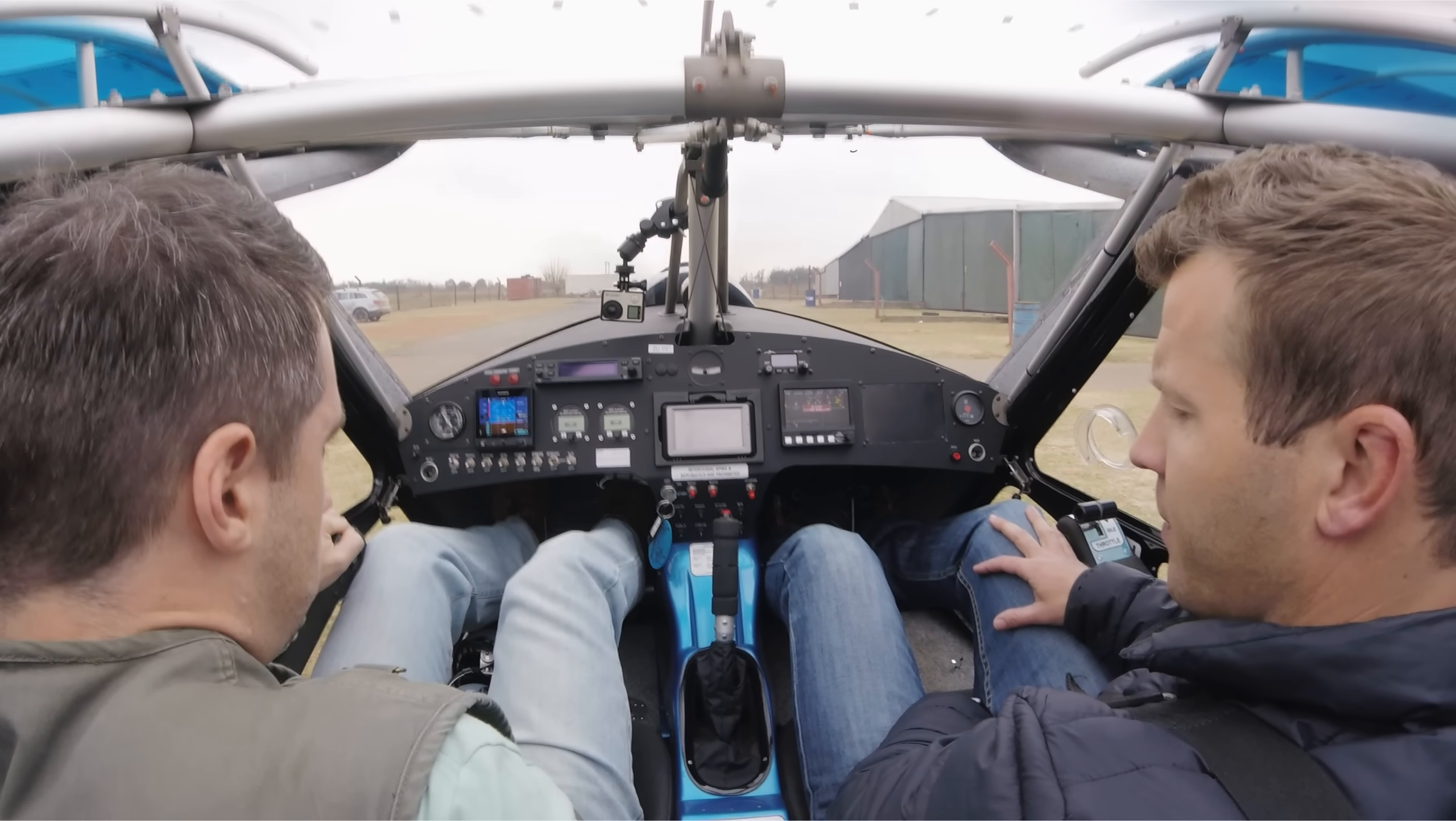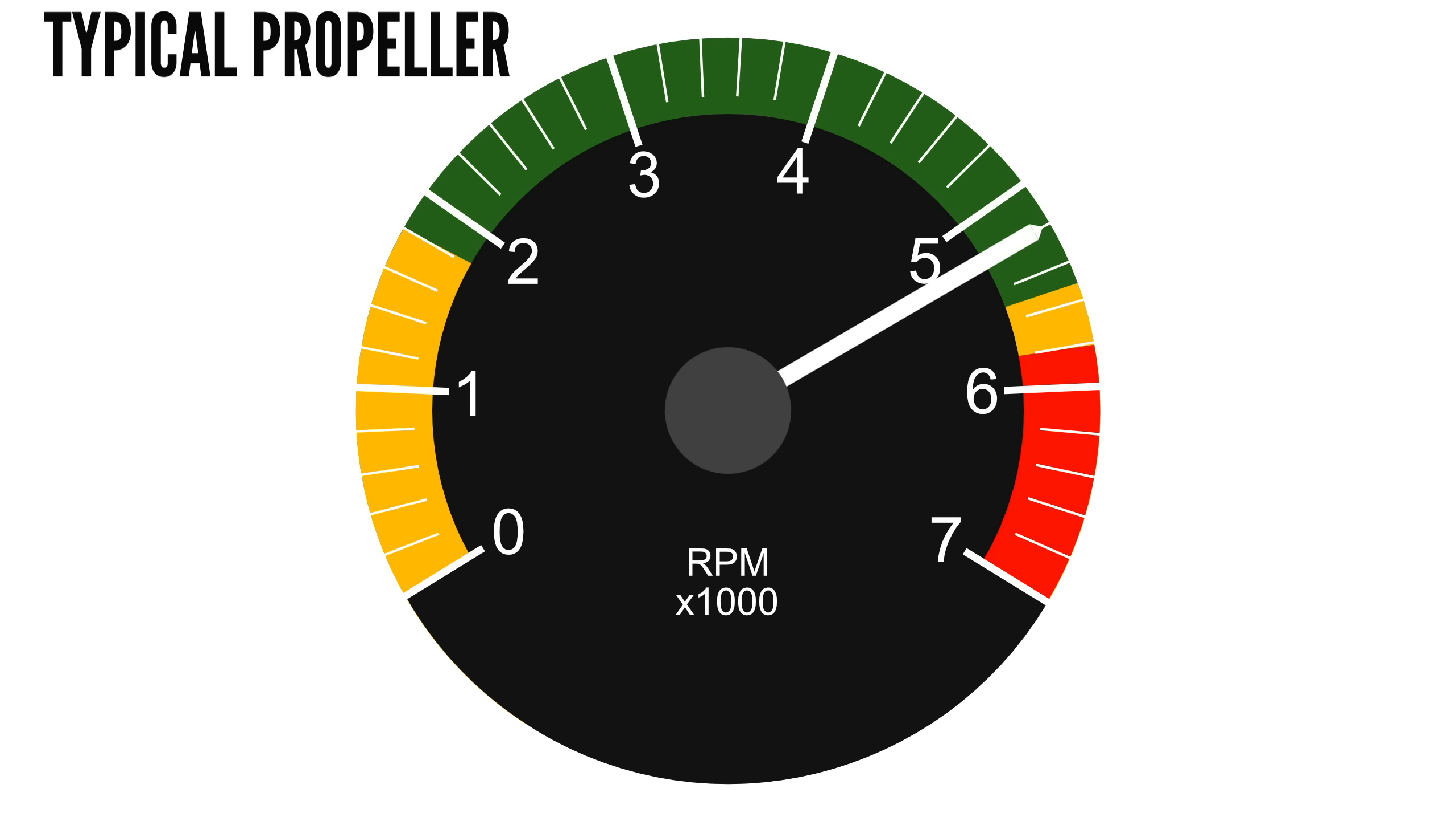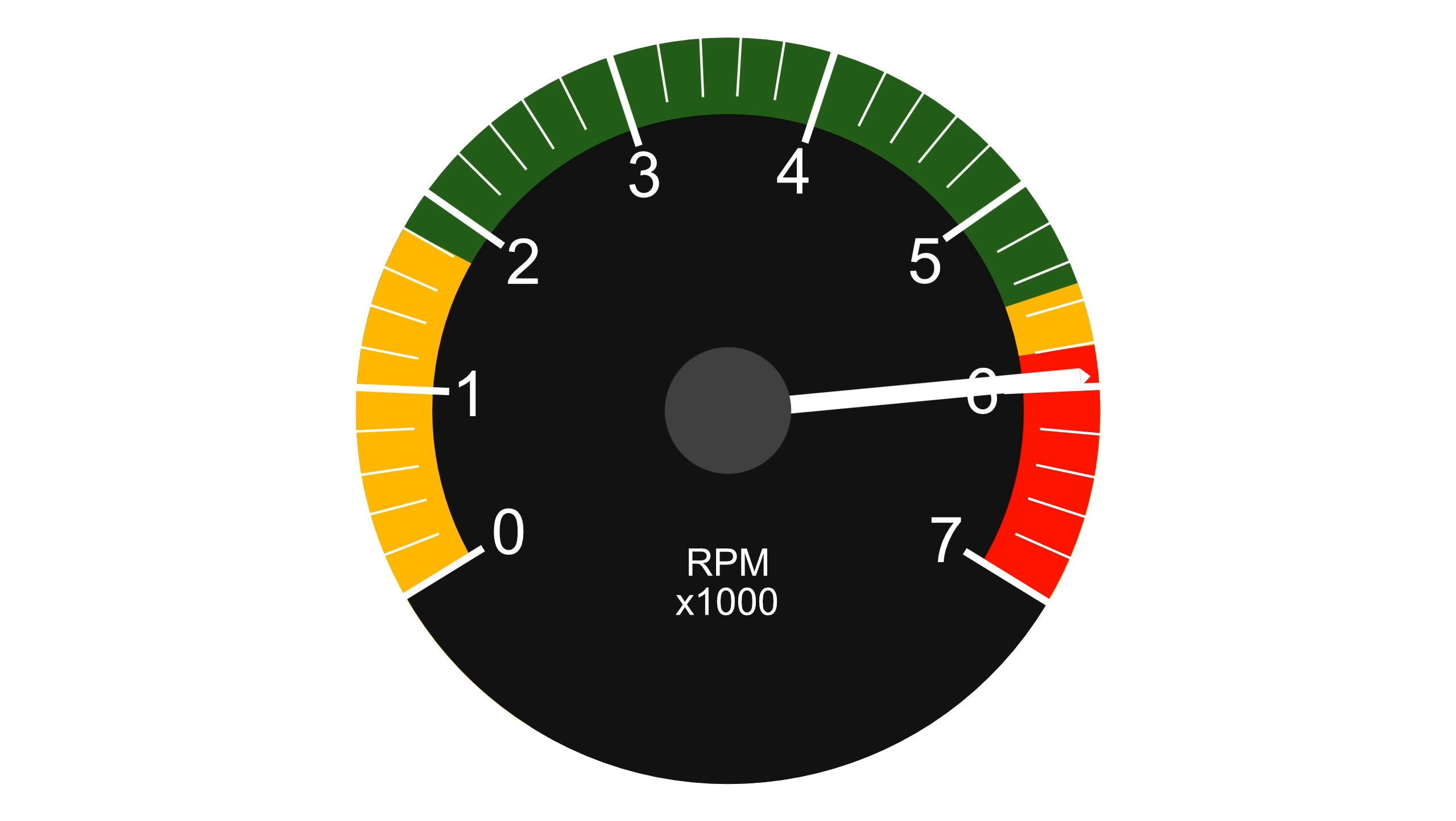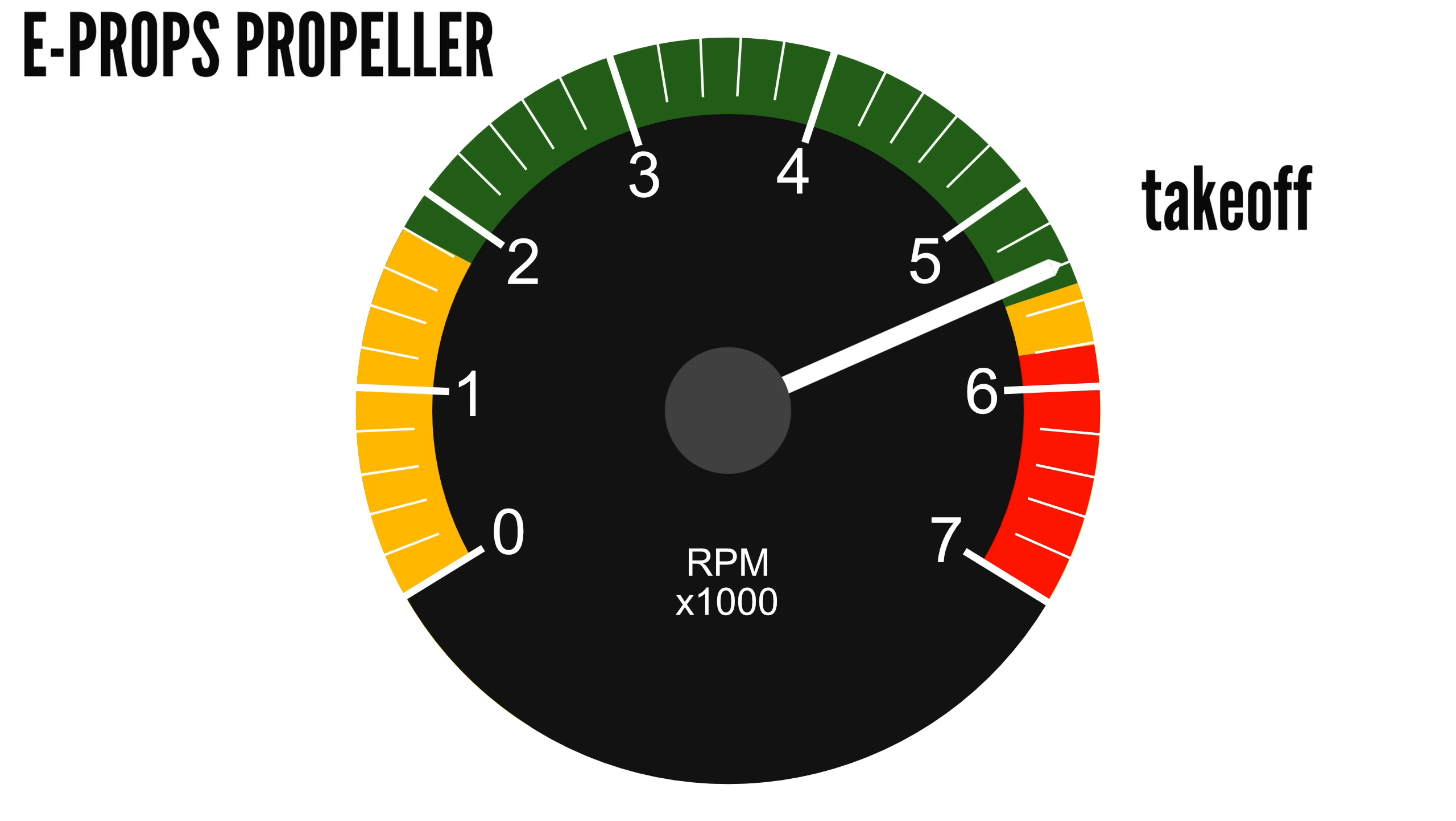With a typical propeller on a Rotax 9 series engine, RPM can easily vary by over 700 between takeoff and full power level flight. However, with an E-PROPS propeller, RPM changes by only about 100 between takeoff to full power level flight.